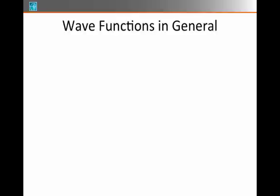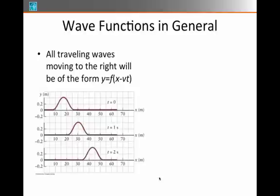So in general, wave functions that move to the right will always be of some form y as a function of the variable x minus vt. It only matters how big x is compared to vt. That's for a wave moving to the right.